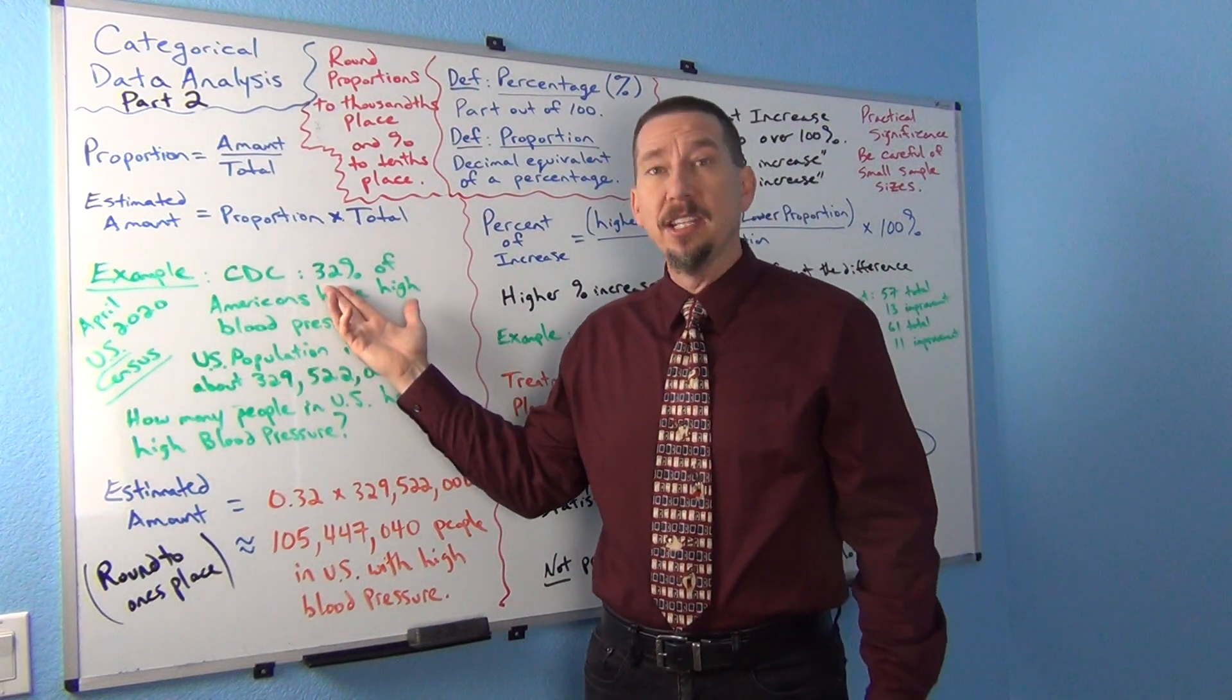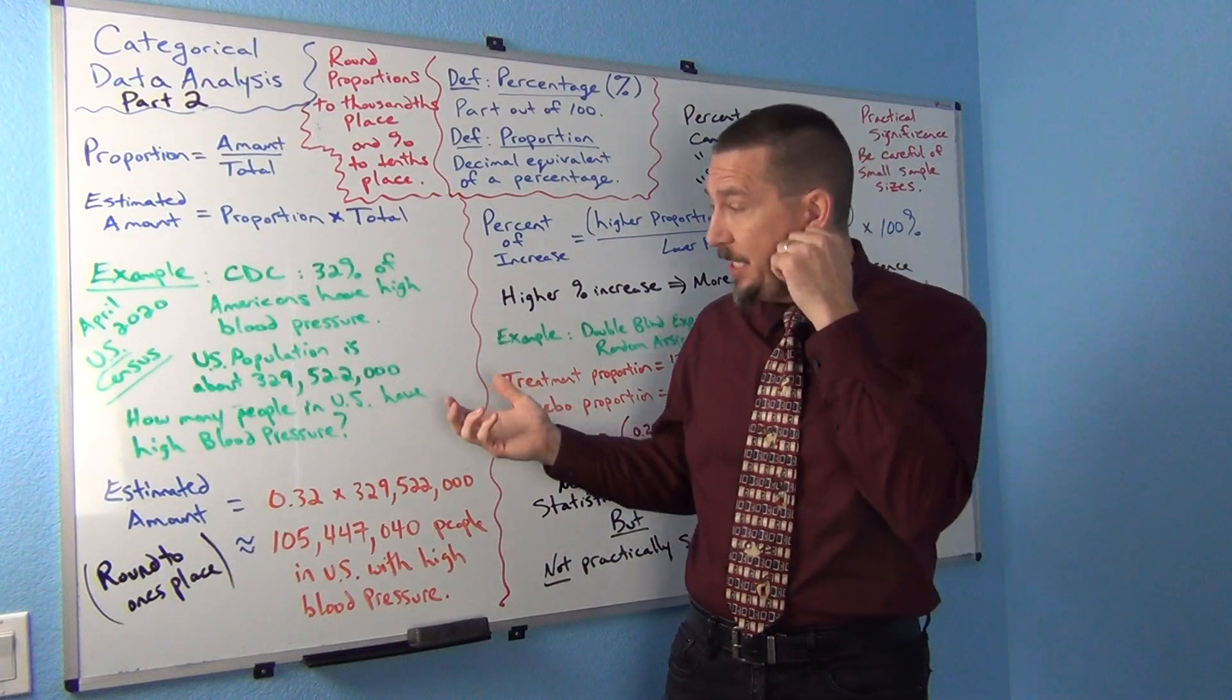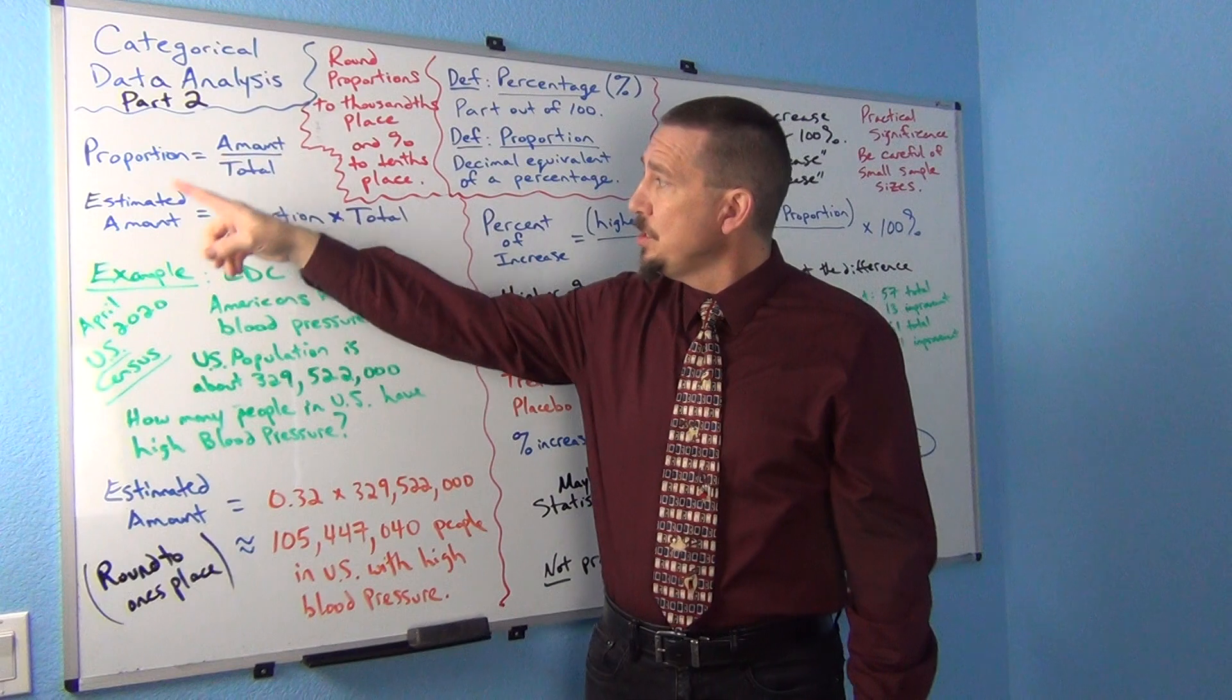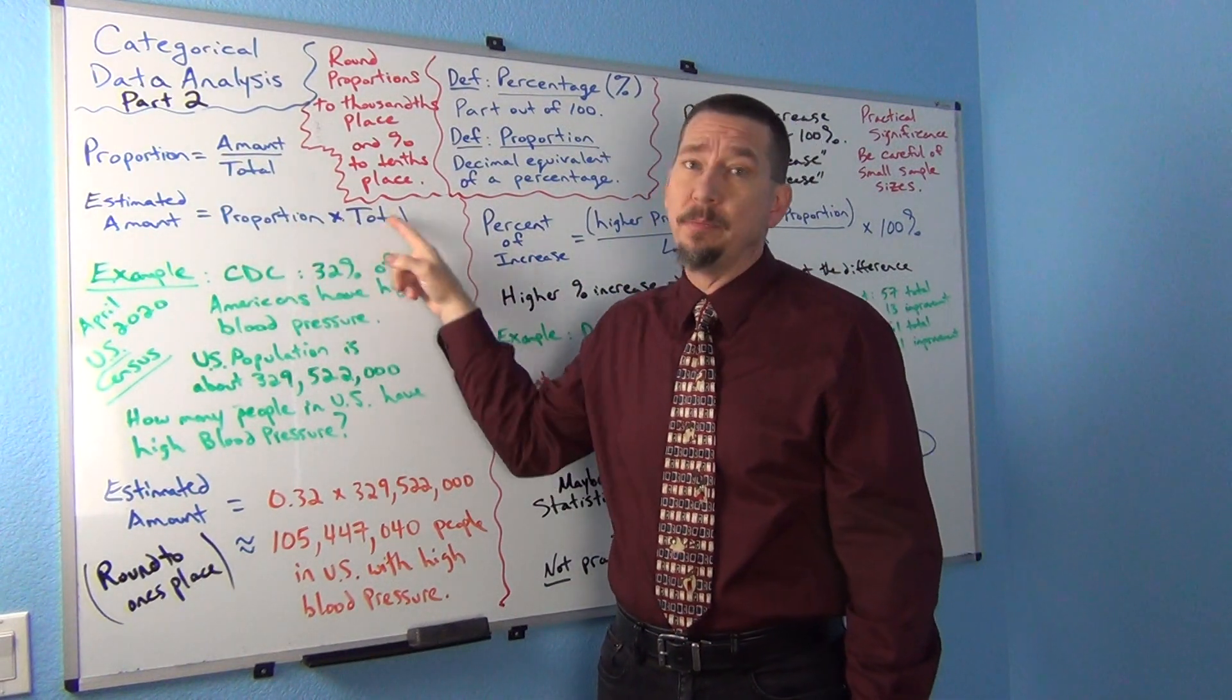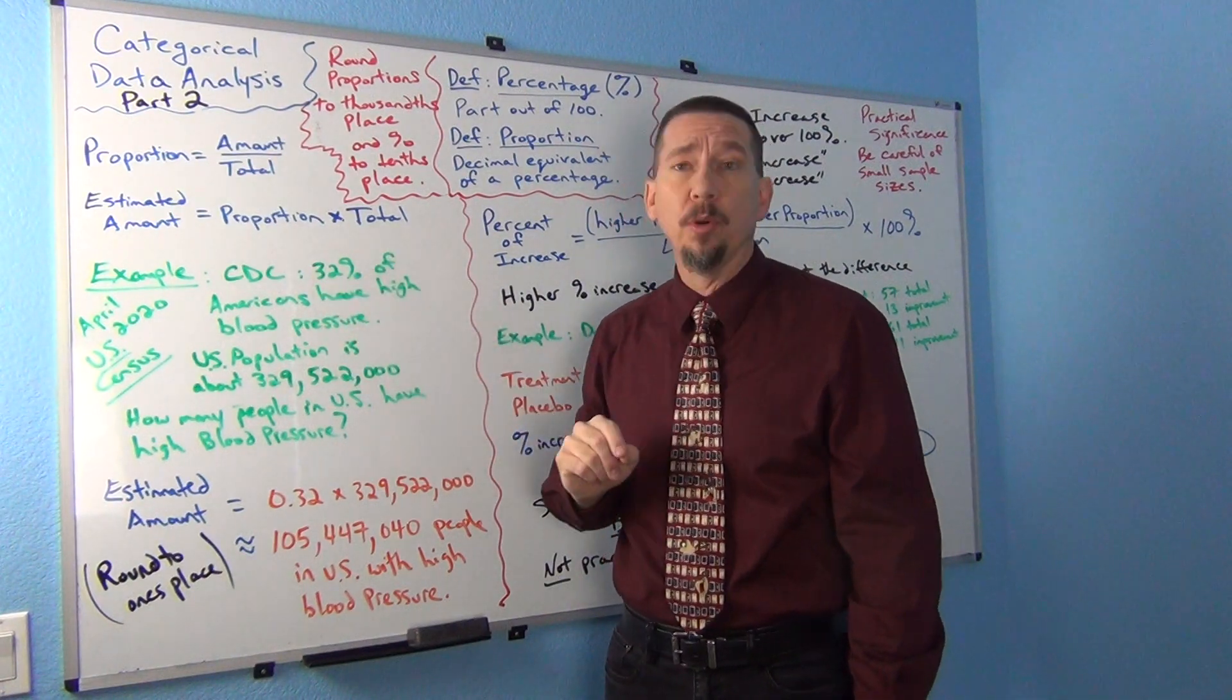Again, the CDC indicates that it's about 32%. So we're going to basically estimate an amount using this formula. So you just take the proportion times the total. Now again, 32% is not a proportion. It's a percentage, right? So we need to convert that back to a proportion. We learned last time that that percent symbol means divide by 100.